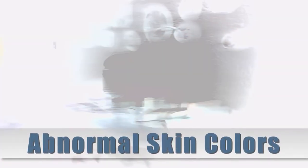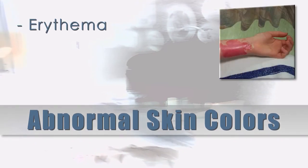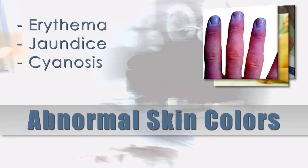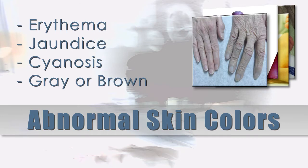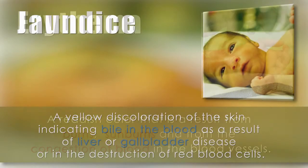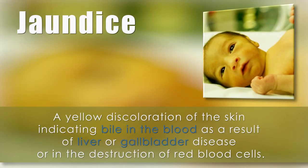Some abnormal skin colors are erythema, jaundice, cyanosis, and gray or brown. Erythema is a reddish color that results from burns and from the congestion of the blood vessels, like a slight bruise. Jaundice is a yellow discoloration of the skin, indicating bile in the blood as a result of liver or gallbladder disease, or in the destruction of red blood cells.